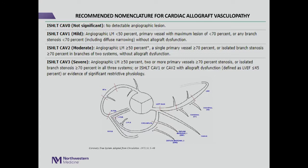This is the current ISHLT grading system for coronary allograft vasculopathy. As you can see, it is based on angiography, and particularly the CAV3 status also includes cardiac function and restrictive physiology as two of the criteria for this diagnosis.